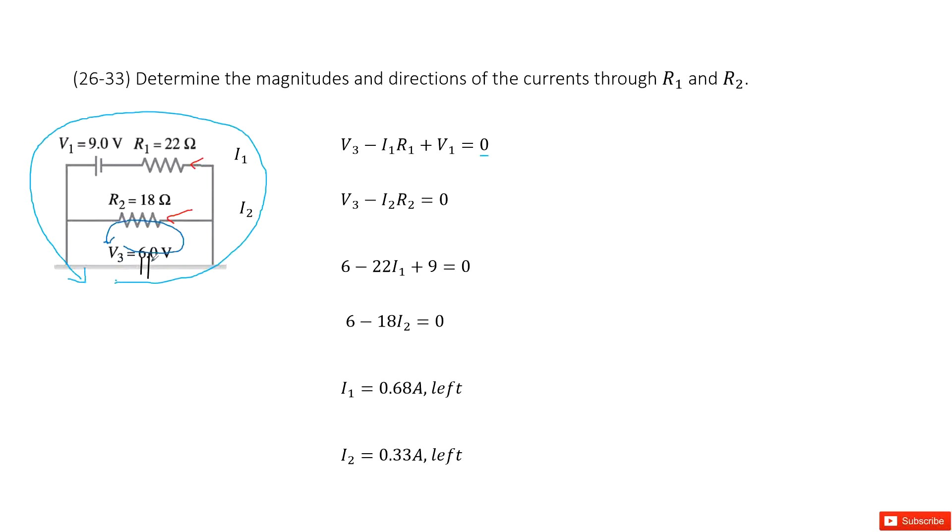So this one, we can see, we have V3, and then go through the resistor R2, making the voltage decrease. So minus I2 times R2 equals zero.